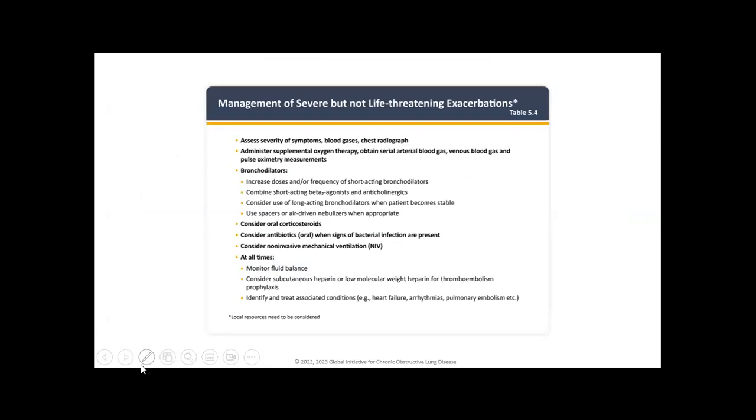We're going to discuss treatment of severe exacerbations. This is a nice basic overview. In terms of bronchodilators, short-acting beta agonists are considered first-line with or without anticholinergic. Consider long-acting bronchodilators when patients become stable. We encourage patients to continue their chronic therapy while in hospital or initiate long-acting therapy as soon as possible.